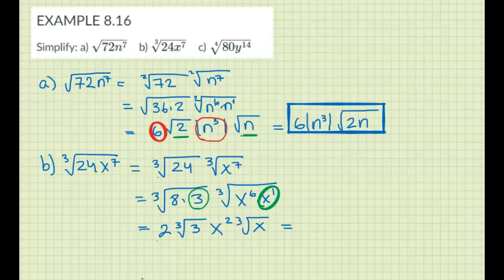Alright, now take these, put them in front, so 2x squared. And take these together, this one and this one, and put them under one radical. So cube root of 3x. There we go.